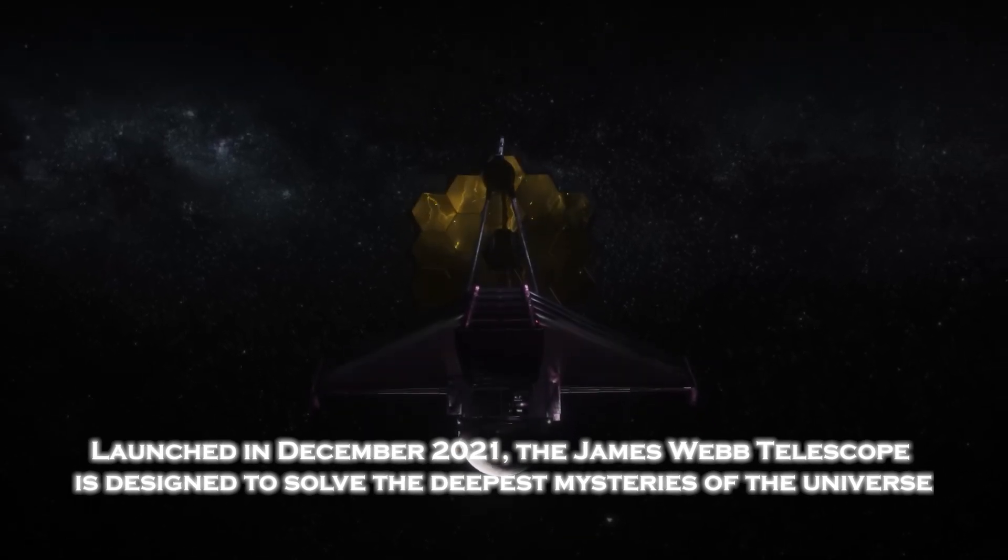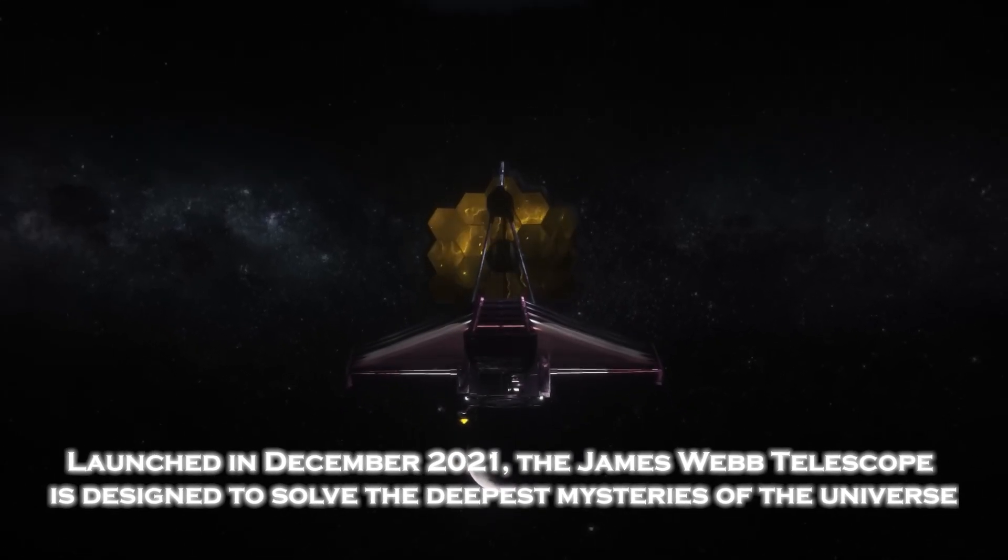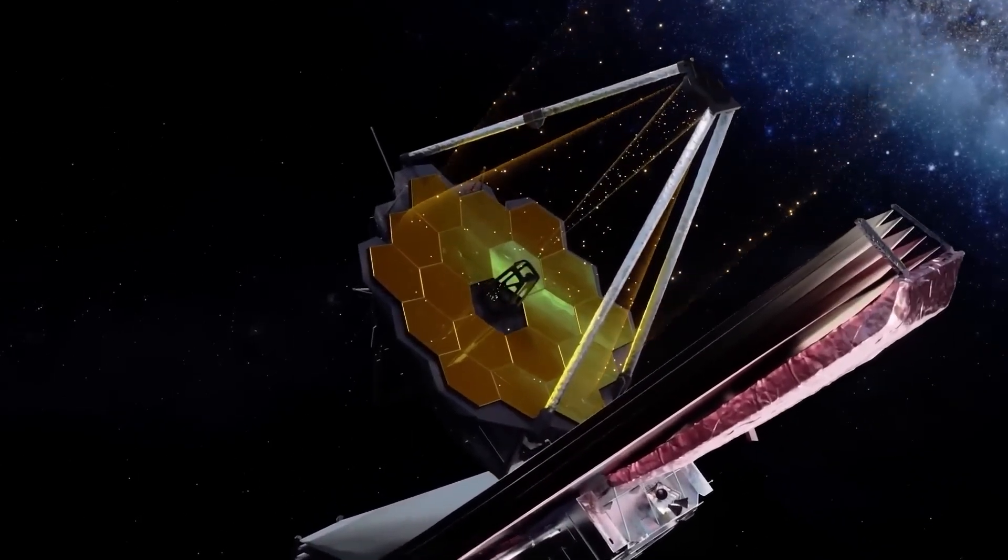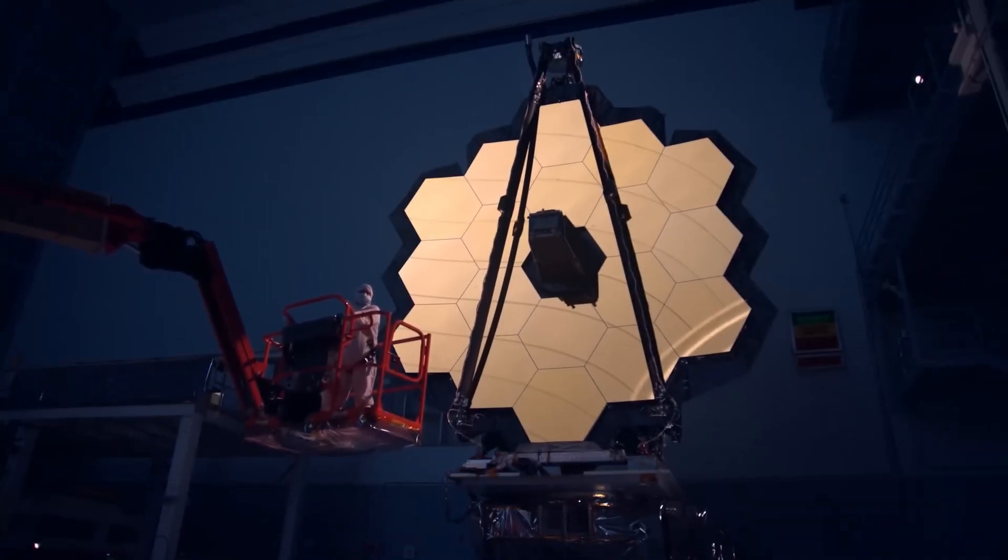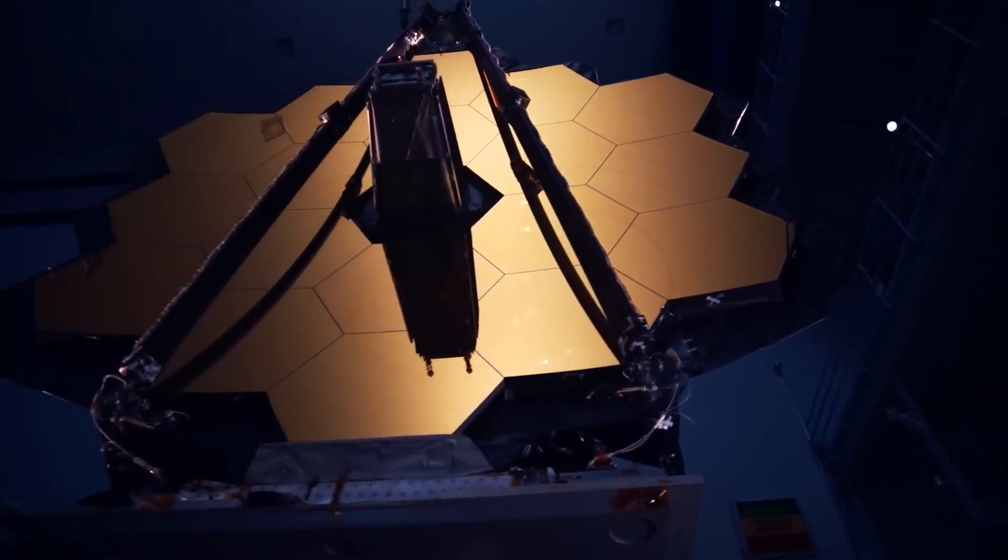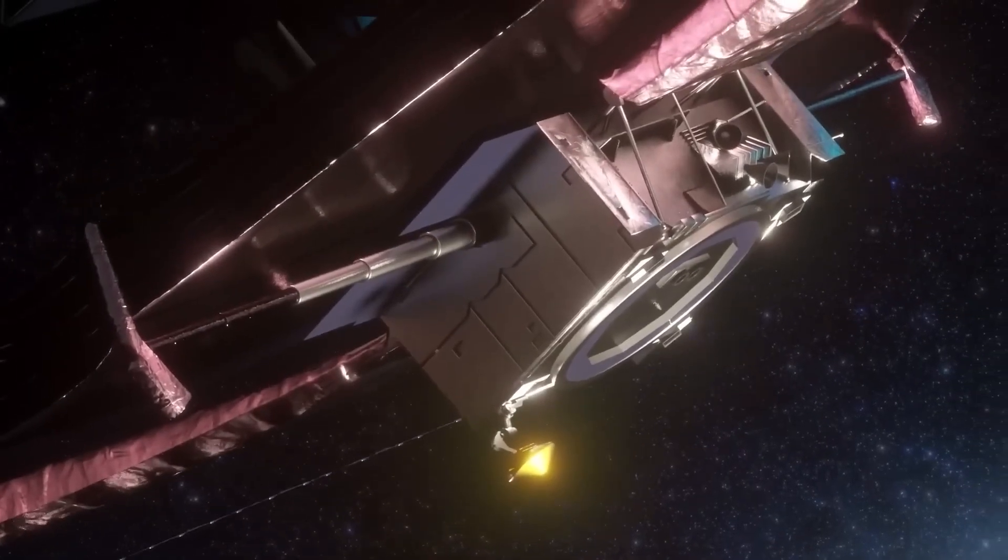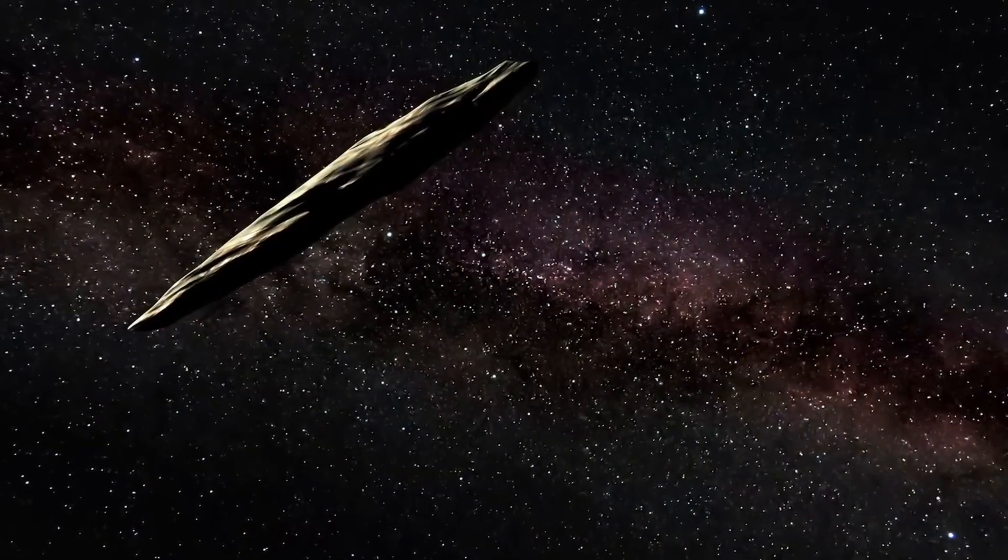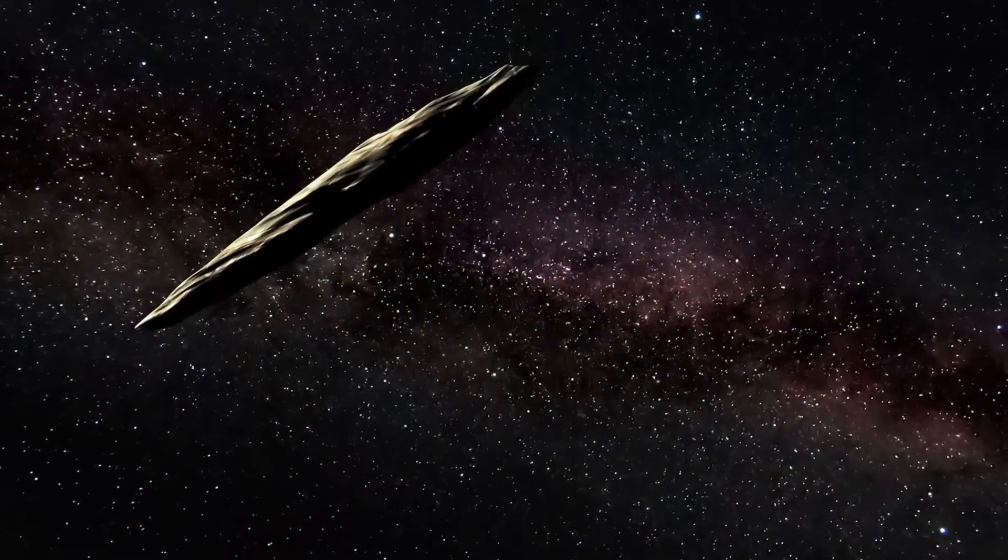Launched in December 2021, the James Webb Telescope is designed to solve the deepest mysteries of the universe. Its ability to observe the infrared spectrum allows it to capture details impossible for other telescopes. When Webb turned its gaze toward Oumuamua, now much further from our solar system, it captured something incredible: the first real image of this mysterious interstellar object.